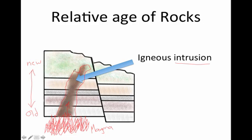Now if that magma kept moving and spilled out onto the surface, once it breaks through it's no longer called magma — it's called lava. And that's not called an intrusion since it's not in the earth; it's called an extrusion, and that forms a different kind of igneous rock.